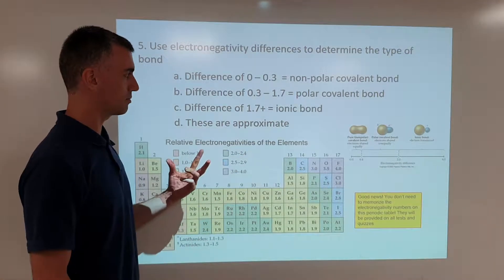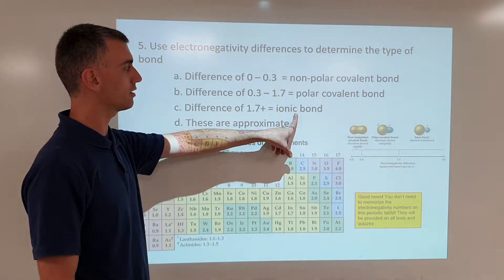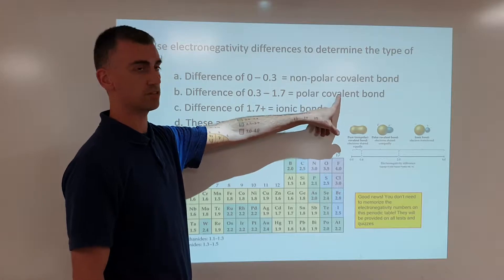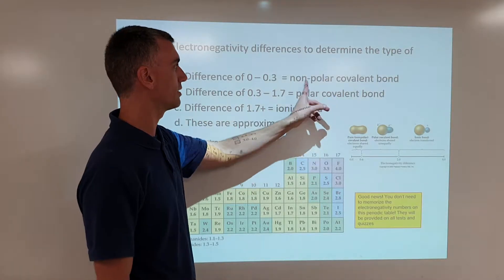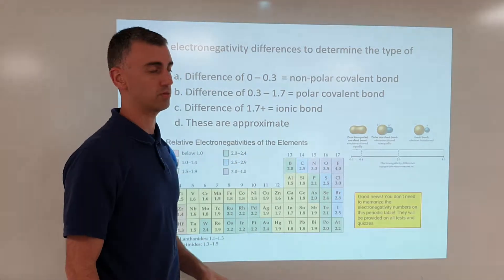A chemical bond comes in two varieties: ionic bonds, where electrons are transferred from one atom to another, or covalent bonds, where electrons are shared either equally to make a non-polar covalent bond or shared unequally to make a polar covalent bond.